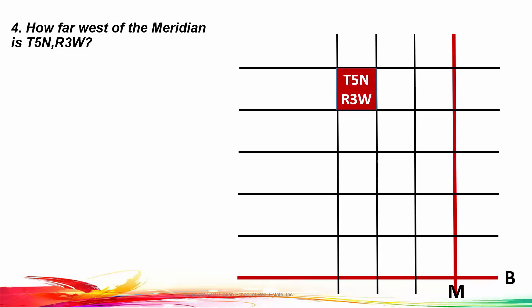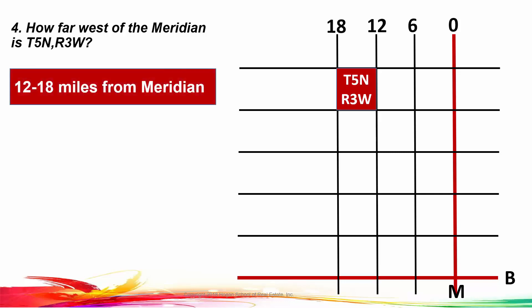If you're not sure, just count from the bottom. Here's Township 1 North, 2 North, 3 North, 4 North, 5 North. Range 1, 2, 3 West. So that's Township 5 North, Range 3 West of the baseline and meridian. The question asks how far that is from the meridian. The meridian being zero and each range line being 6 miles, that township is 12 to 18 miles west of the meridian.